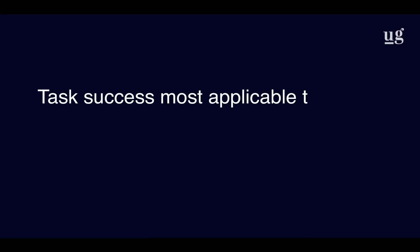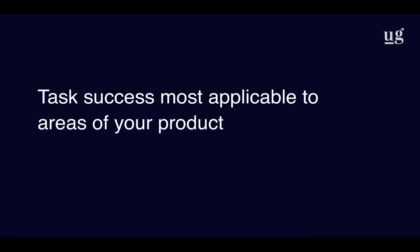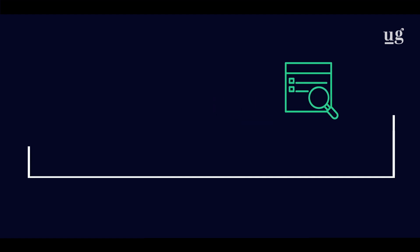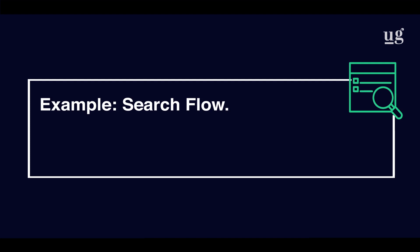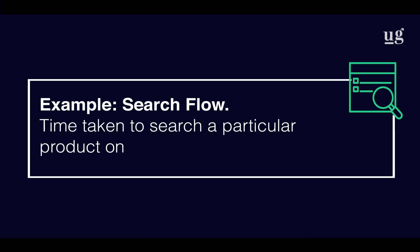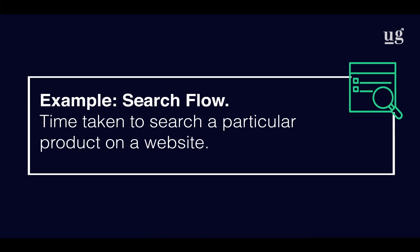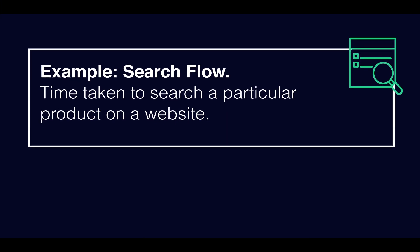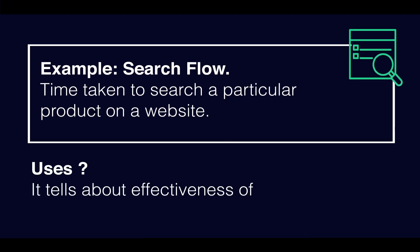And finally, T stands for Task Success. This category is most applicable to areas of your product that are very task-focused. For example, a search flow — it tells about the time taken to search a particular product on a website, and in return, it tells about the effectiveness of your search bar.